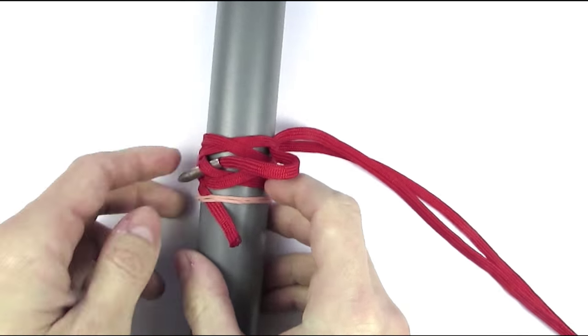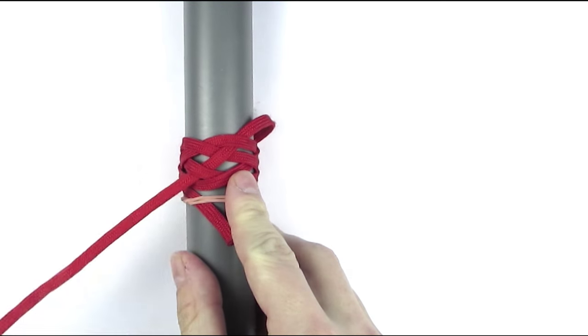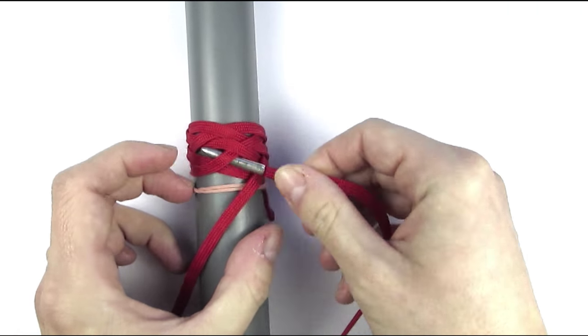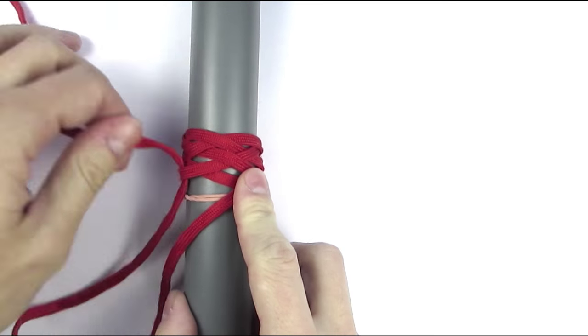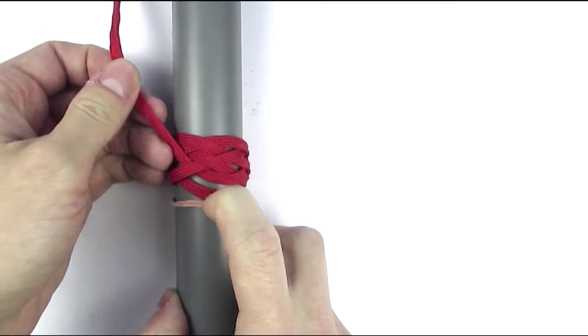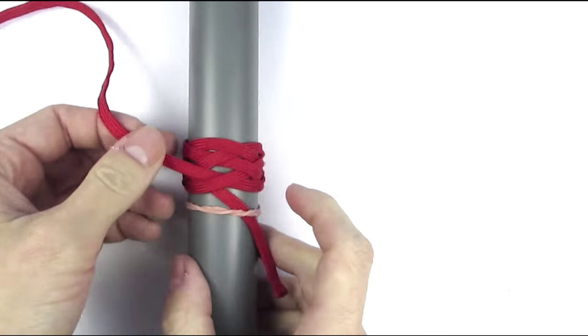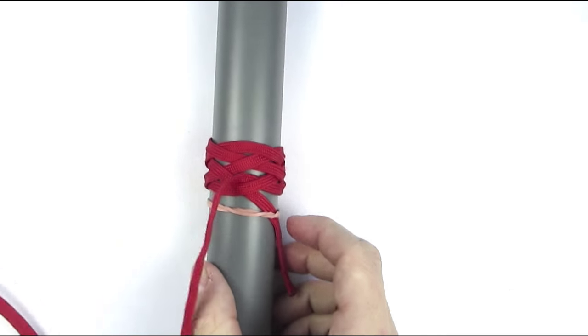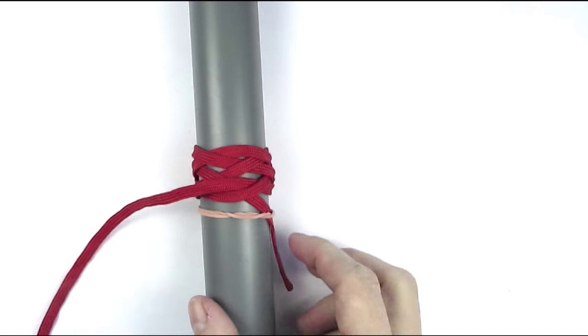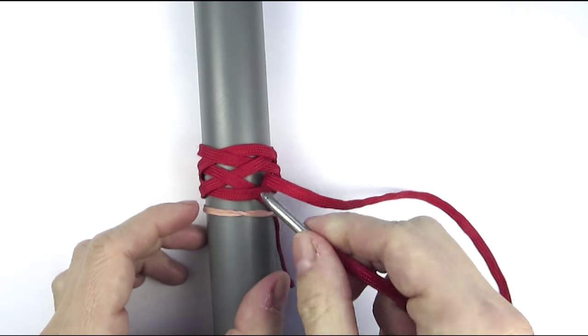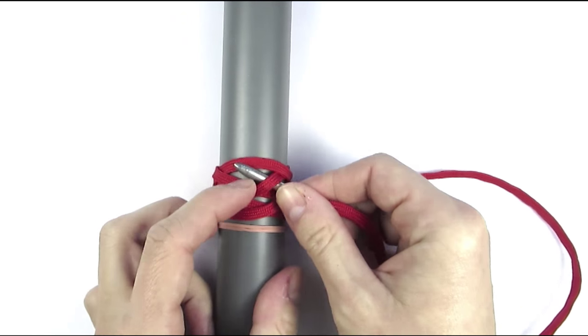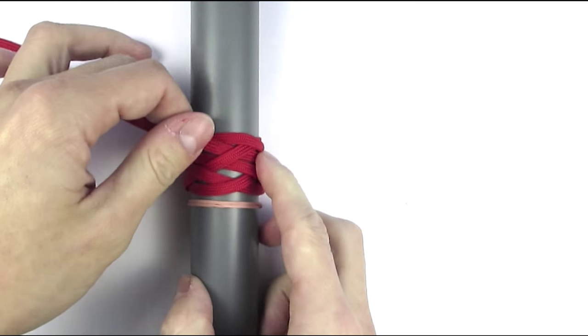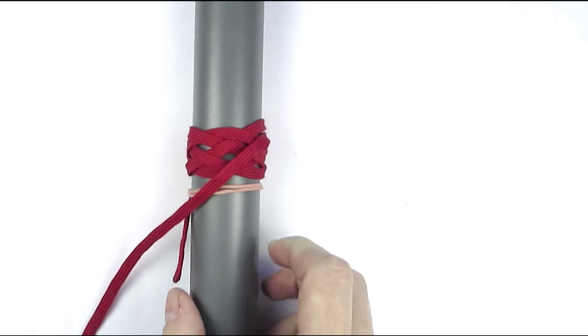We have now completed a 5-part 4-bight Turk's head. We're going to expand it by following our standing end again, doing what it is doing, so going under, then over, under and over. We're going to go back into the knot in the bight to our left.